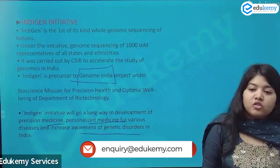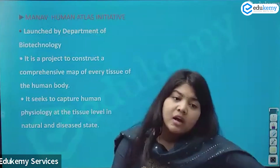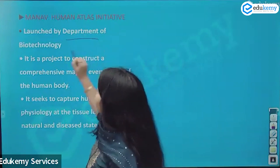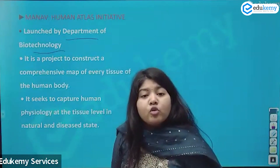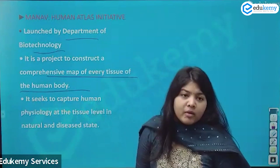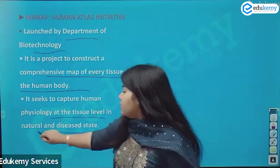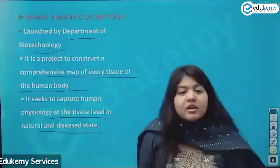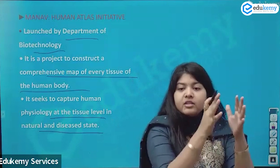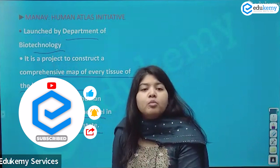Next is the Map of Human Atlas, also by the Department of Biotechnology. What are you going to do? You are going to create a comprehensive map of every tissue of the human body. It seeks to capture human physiology at the tissue level — comparing how tissue looks when it is healthy or in its natural form versus when it is in the diseased form. Three points are more than enough for this initiative.